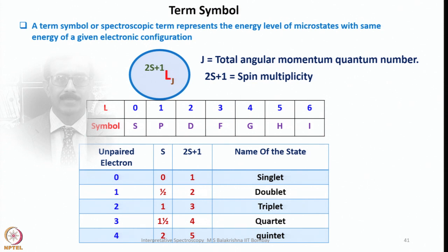A term symbol is represented as (2S+1)LJ. J can take any value. For a subshell less than half-filled, L minus S is the most stable and is considered the ground state. For a subshell with more than half-filled electronic configuration, L plus S is considered.